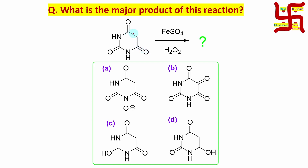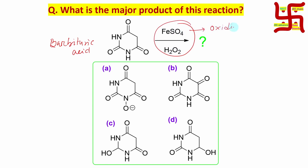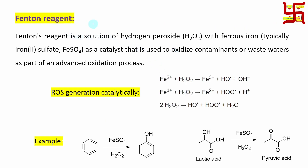Now the question: what is the major product of this reaction? Here, this molecule has the name barbituric acid. And if you react it with iron sulfate and hydrogen peroxide, which is actually an oxidizing reagent in combination, it produces some product. What is the structure of the product? Four options are provided.